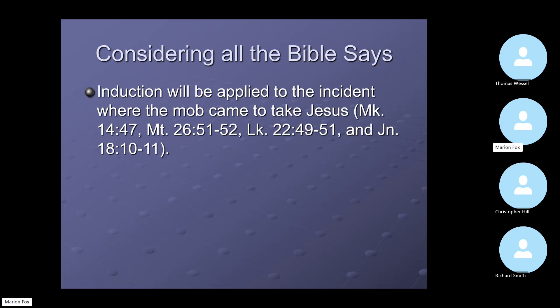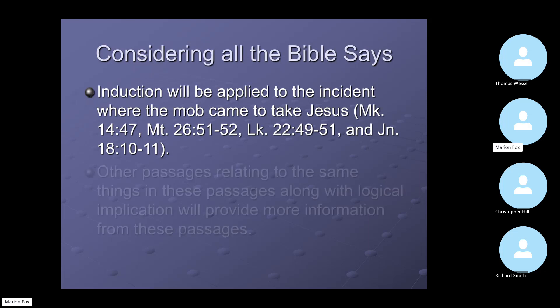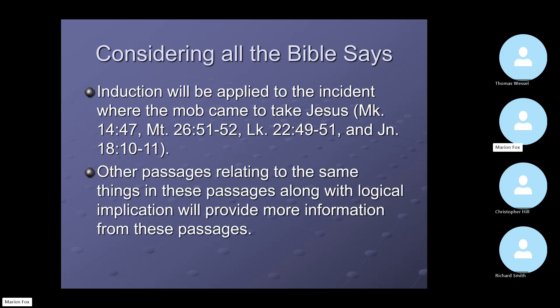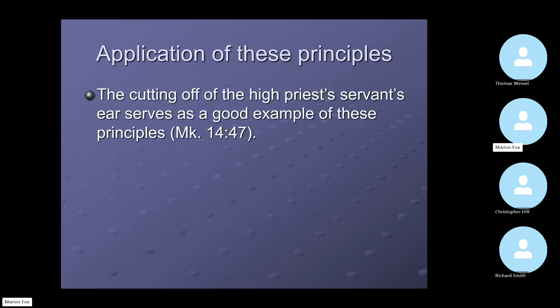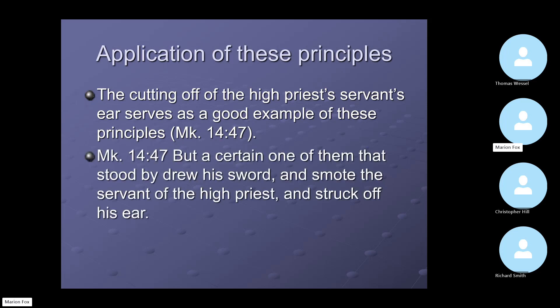We're going to look at the mob that came to take Jesus. Here are four passages giving accounts of this incident. We'll take some other passages as peripheral points on this subject, and when we get through, we're going to know all that God wants us to know for our salvation on this particular subject. The cutting off of the high priest's servant's ear serves as a good example of these principles. In Mark 14:47 we see: a certain one of them that stood by drew his sword and smote the servant of the high priest and struck off his ear.